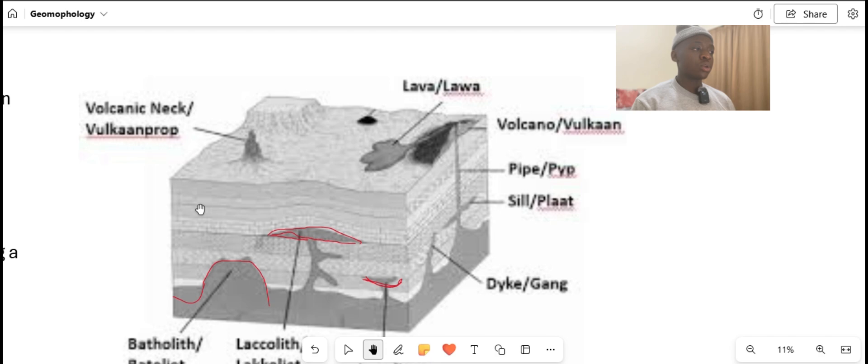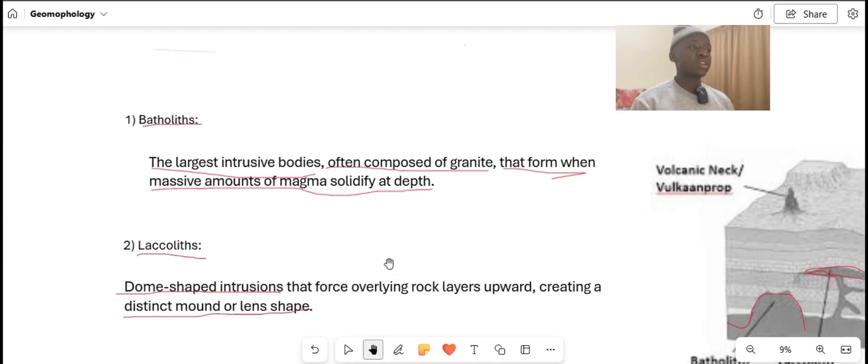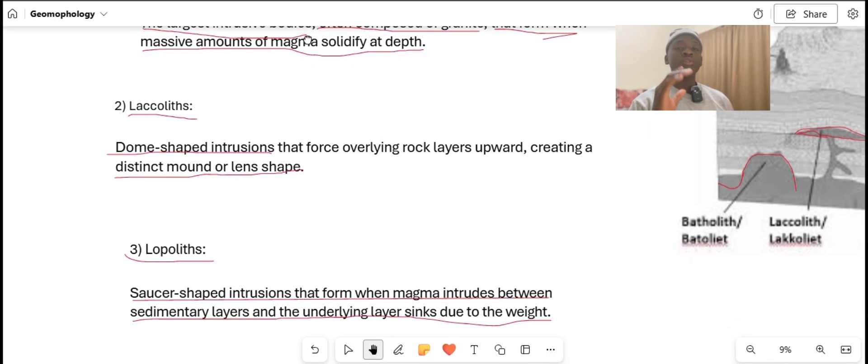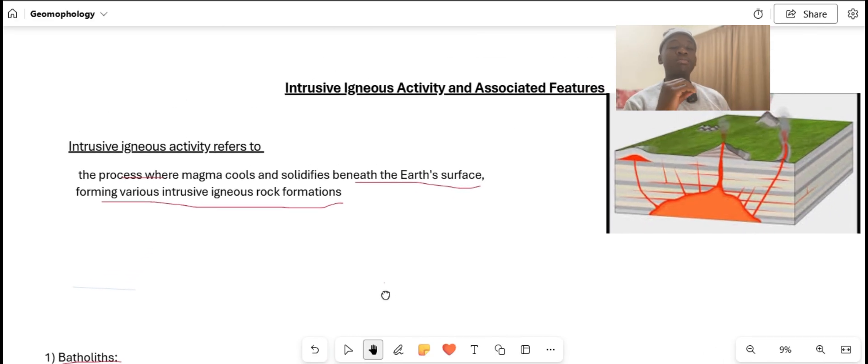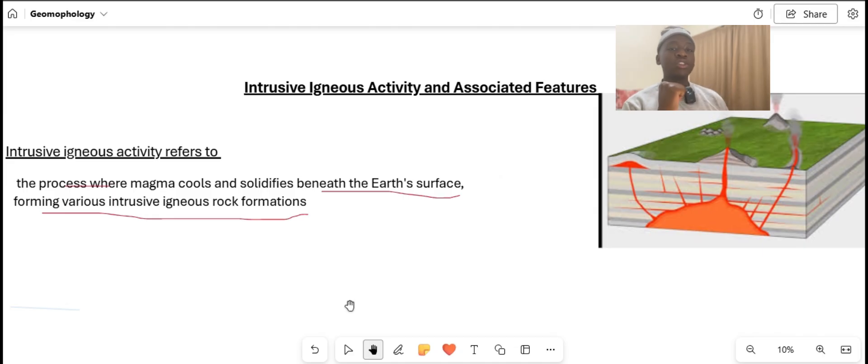If they give you a diagram and say identify three types of igneous intrusive rocks, you can name the batholith, the lopolith, and the laccolith. That is the end of the lesson. It's a small chapter, but make sure to understand it thoroughly in order to pass the examination.